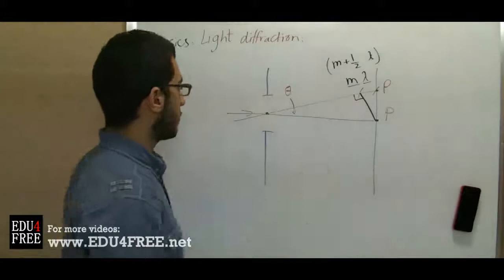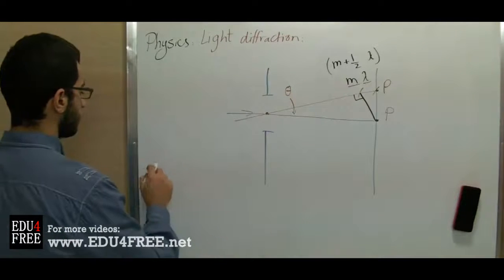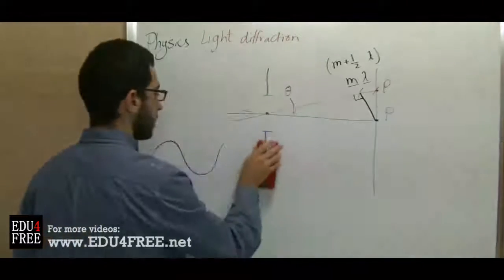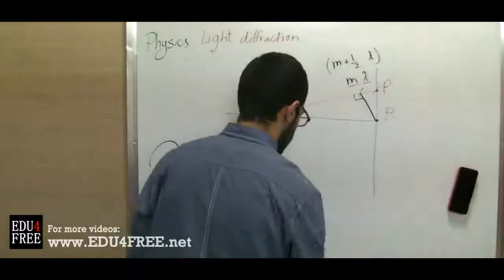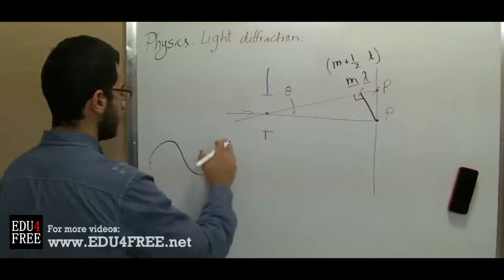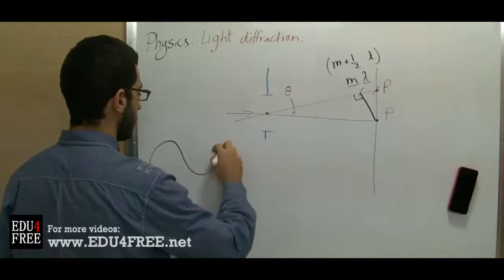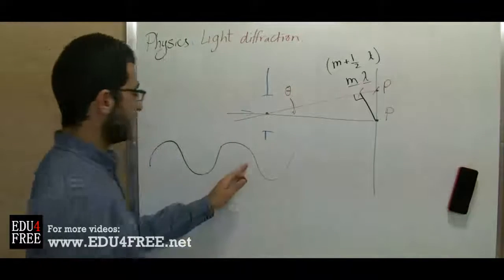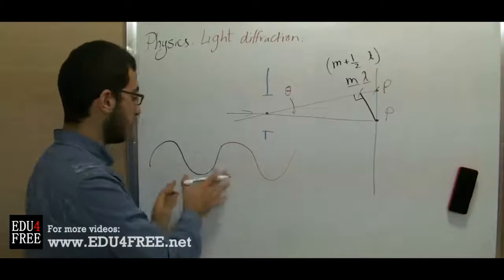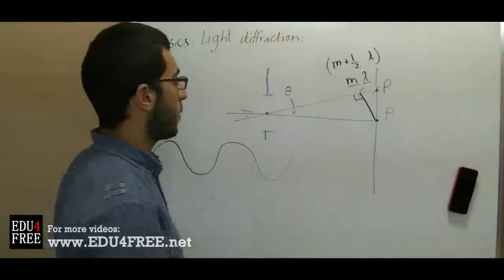And then we have a wavelength, which is pretty similar to that one. So we will get the remaining part of the wave. So it will construct the wave. So we will have a bright spot.